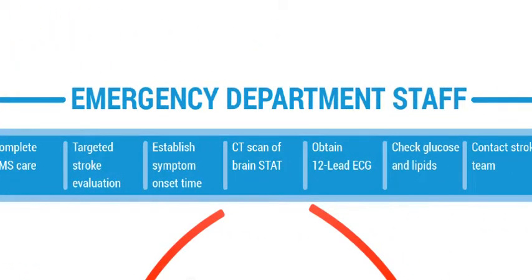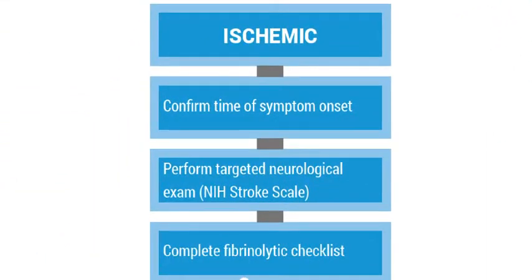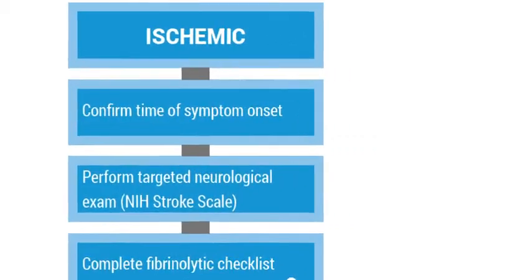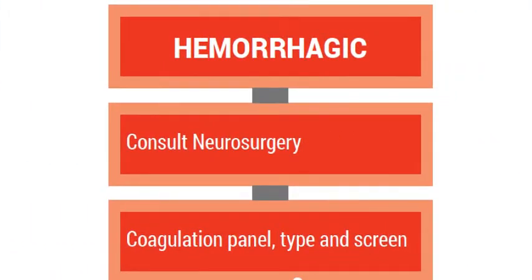The emergency department staff should follow these steps and instructions for both ischemic and hemorrhagic stroke. For ischemic stroke, confirm time of symptom onset, perform targeted neurological exam, and complete fibrinolytic checklist. In hemorrhagic stroke, consult neurosurgery and perform coagulation panel, type, and screen.